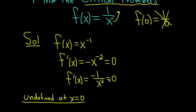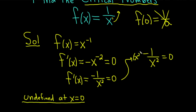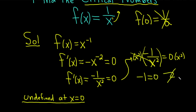Now let's look at where the derivative equals 0. We have negative 1 over x squared equal to 0. If you try to solve this, you multiply both sides by x squared. You get negative 1 equals 0 — that's a contradiction. This symbol means contradiction, so there's no solution there.